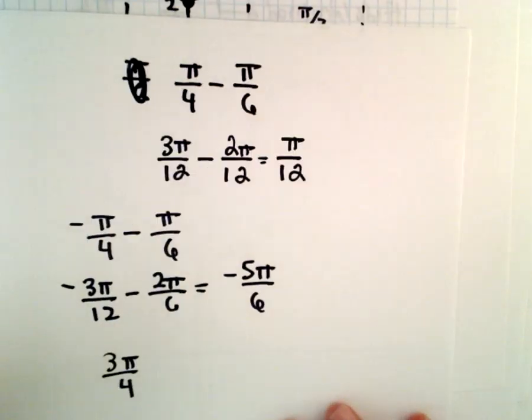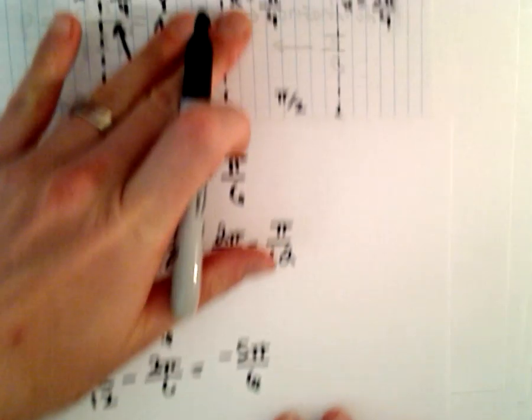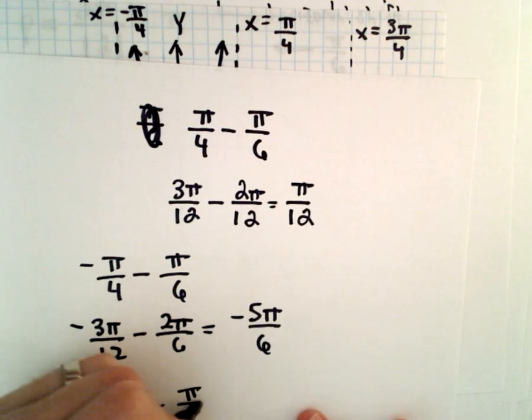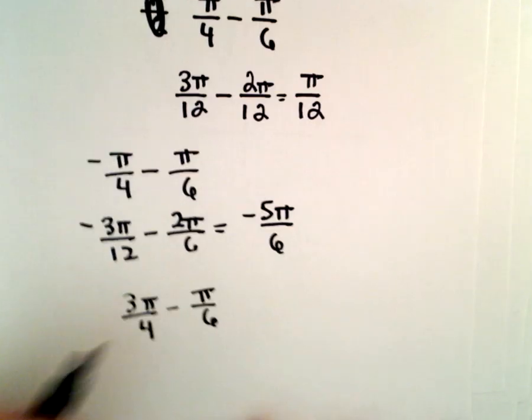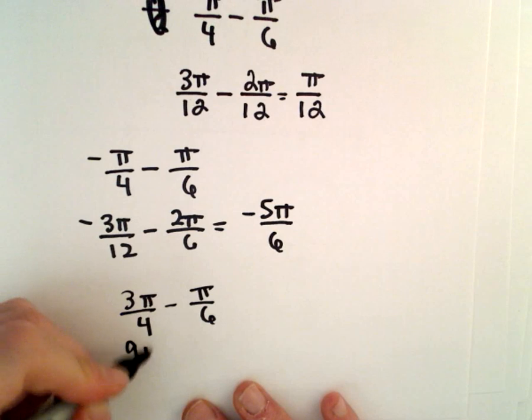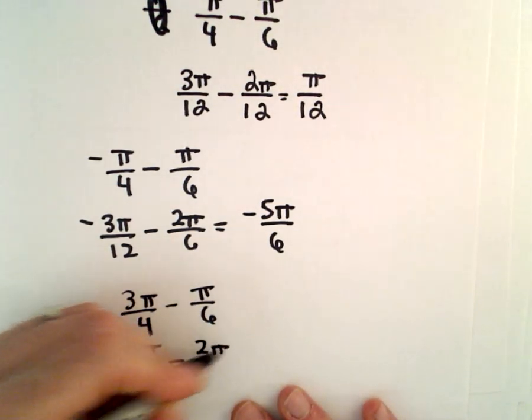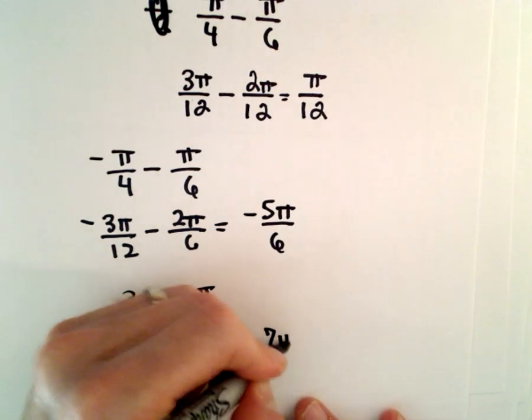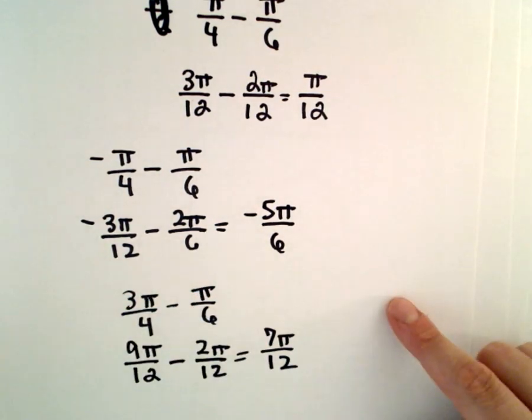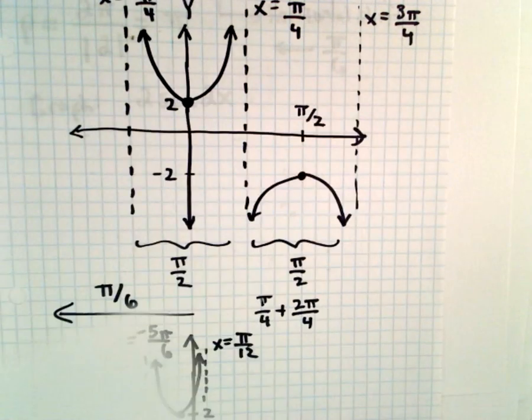If we move the other asymptote that was at 3 pi over 4, we had the asymptote at 3 pi over 4. So, again, if we move it to the left by pi over 6, well, that'll be 9 pi over 12. Top and bottom by 2, that'll be 2 pi over 12. That's going to give you 7 pi over 12 as the location of your new asymptote.